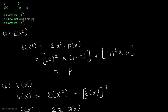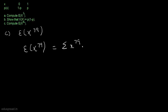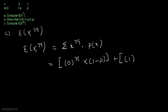Now let's move to part c. In part c, we have to compute the expected value of x raised to the power 79. We can write expected value of x raised to the power 79 as summation of x raised to the power 79 multiplied by p(x). This equals 0 raised to the power 79 times 1 minus p, plus 1 raised to the power 79 times p, which is equal to p. So the expected value of x raised to the power 79 is also equal to p. With this, we are done with this question.